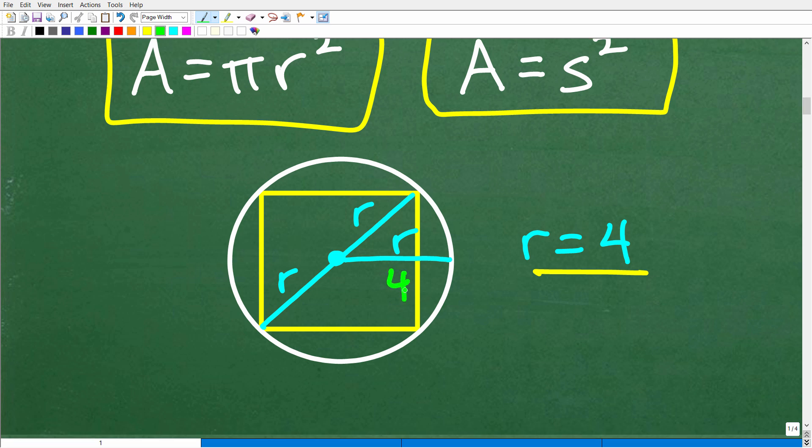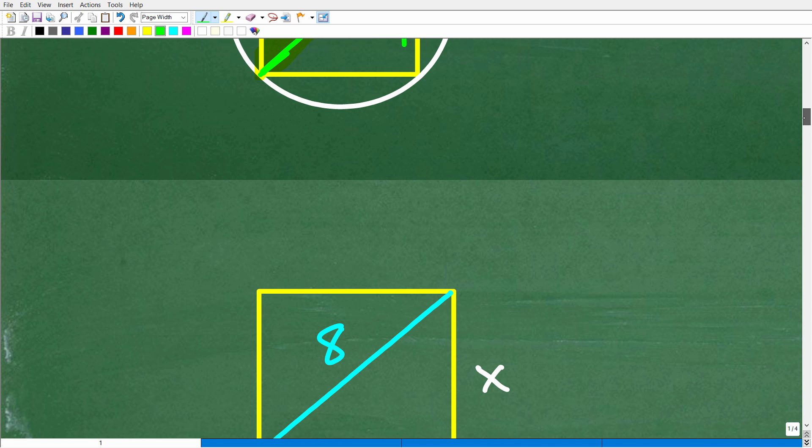If this is 4, then this is 4 right here, and so is this. The entire distance of the diagonal, this part of this triangle, is 8—4 plus 4. We have this square, and we draw the diagonal through it. Now we have two triangles that are the same. The length of this side of the triangle, the hypotenuse, is 8.